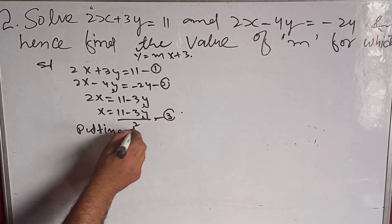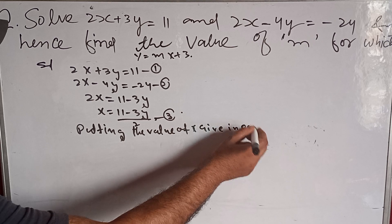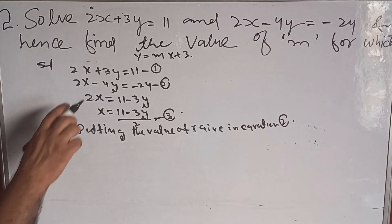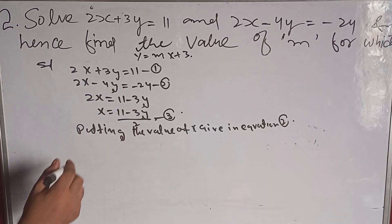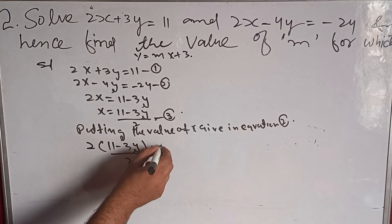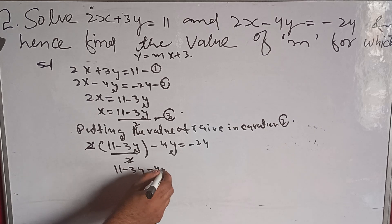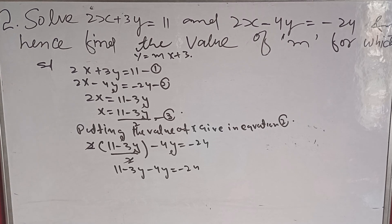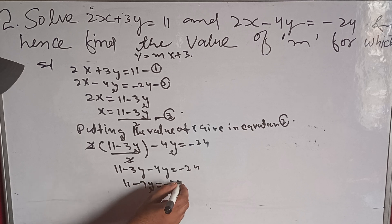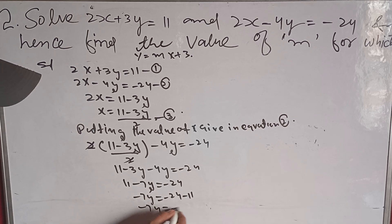Putting the value of x in equation 2: 2x minus 4y is equal to minus 24. Substituting gives 11 minus 3y minus 4y is equal to minus 24. So 11 minus 7y is equal to minus 24. Minus 7y is equal to minus 24 minus 11, giving minus 7y is equal to minus 35.